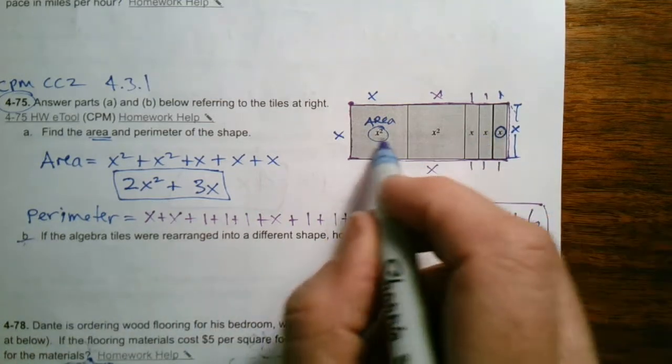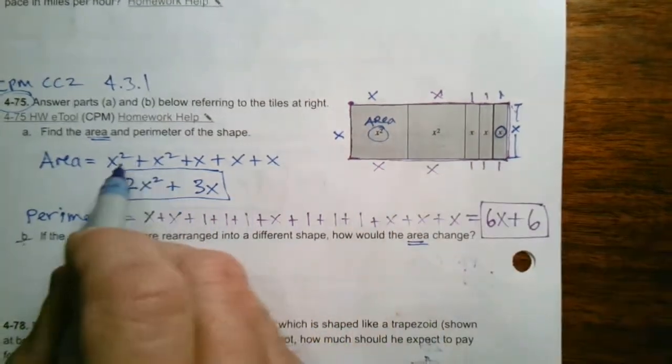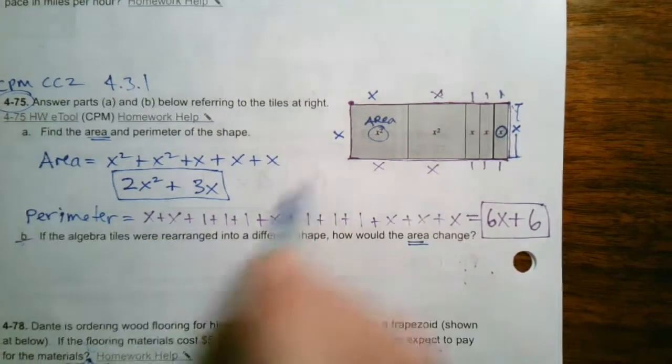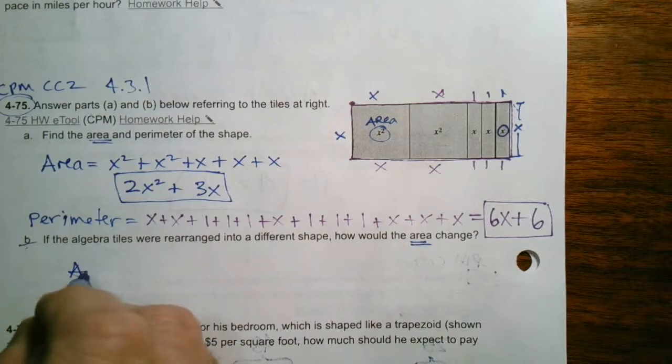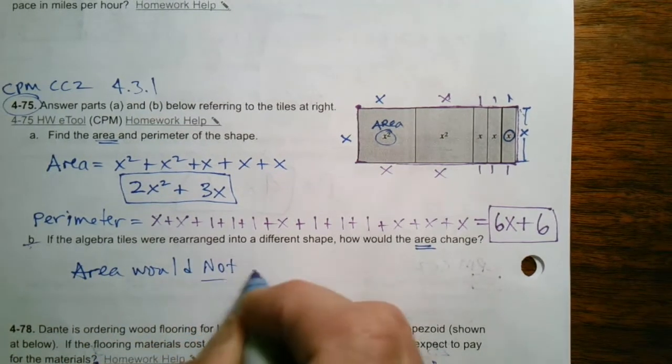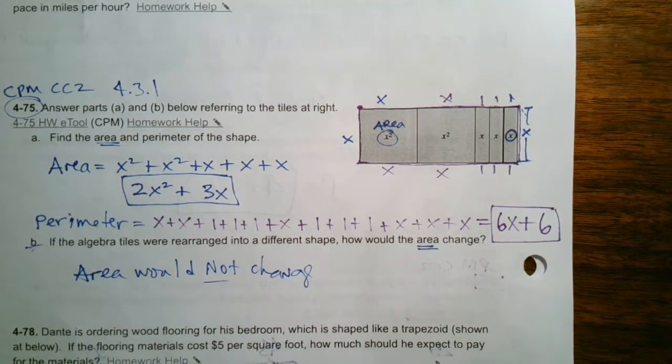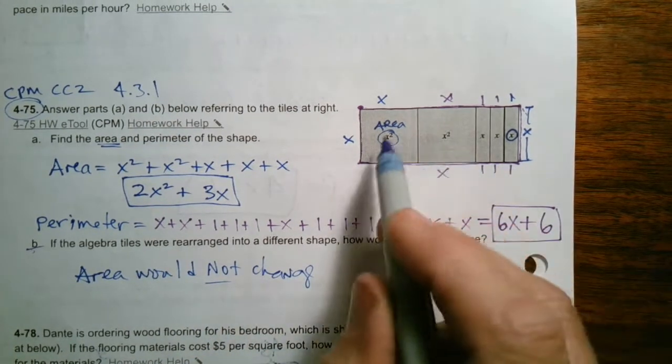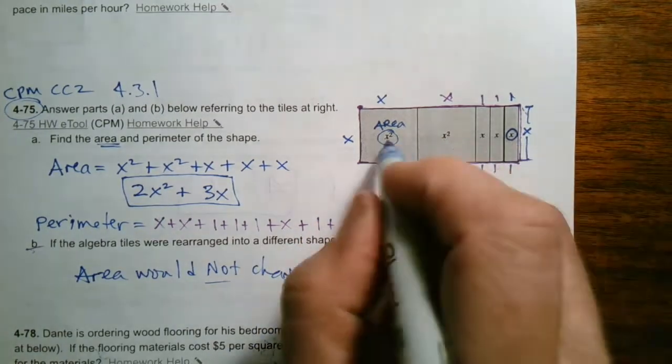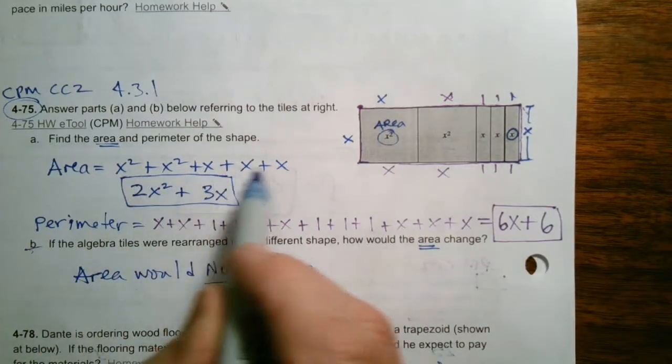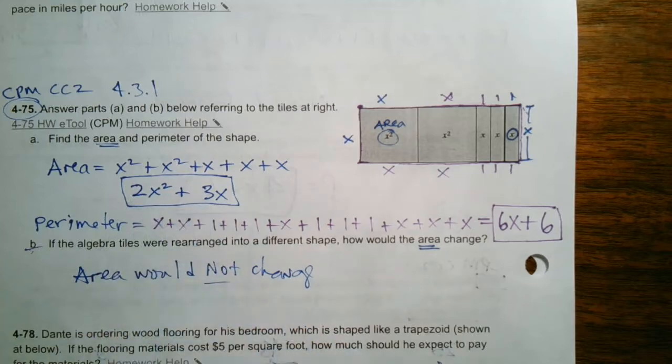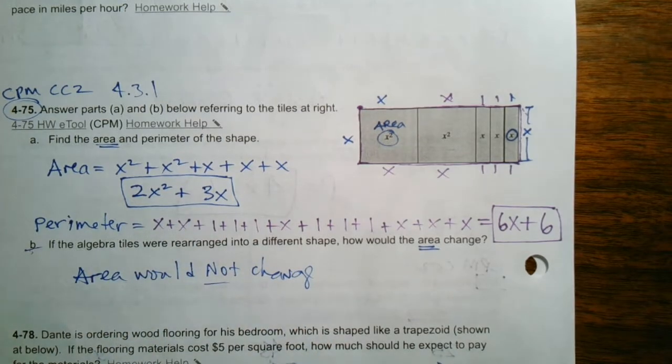So the area would not change because each of these individual tiles, it still would be x squared plus x squared plus x plus x plus x. The images might be in different places. So the area would not change because you're still adding each of those tiles, no matter where they're at. You're adding the actual area of each individual tile, like it's listed here. So you'd still end up with 2x squared plus 3x. All right. There you go.